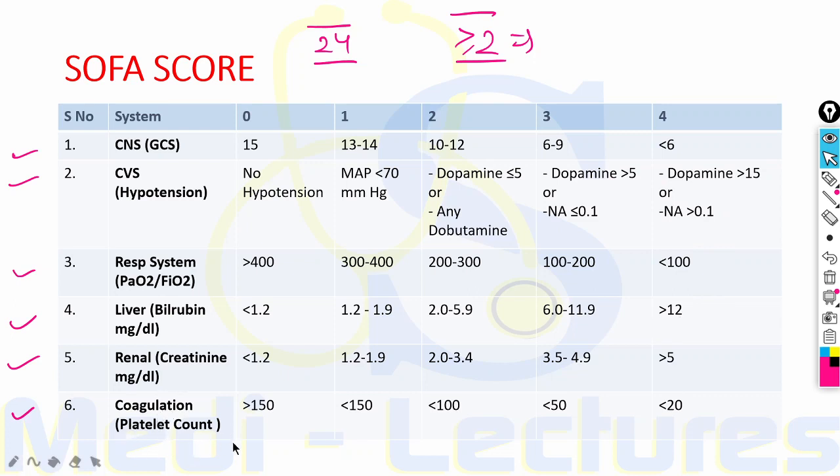For coagulation, platelet count is used: more than 150,000 is score 0, less than 150,000 is 1, less than 100,000 is 2, less than 50,000 is 3, and less than 20,000 is 4. These are the six parameters out of which if the score comes out to be more than or equal to 2, sepsis is present.